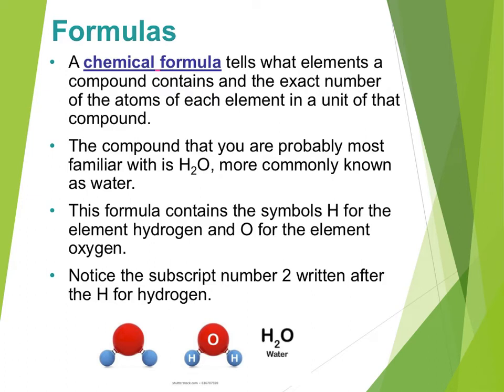When we have a compound, we define that compound by a chemical formula using those same symbols that we used on the periodic table to talk about the elements. A chemical formula tells us exactly the number of atoms of each element in the compound. I'm going to start with something really familiar here: H2O, which is water.